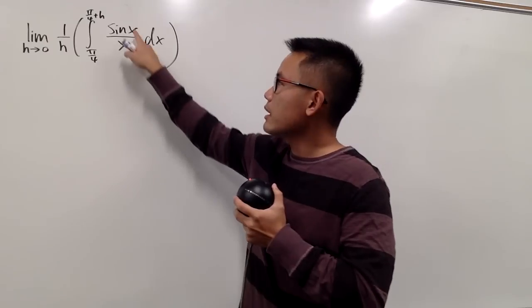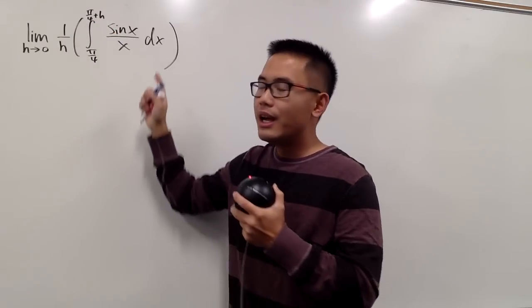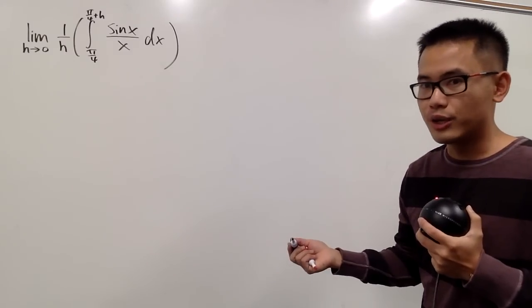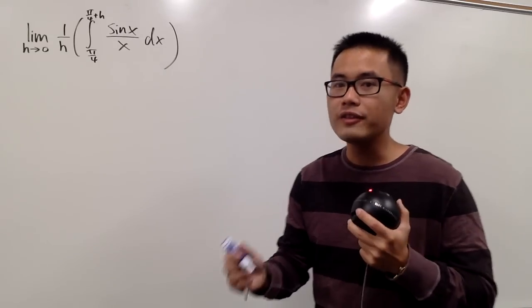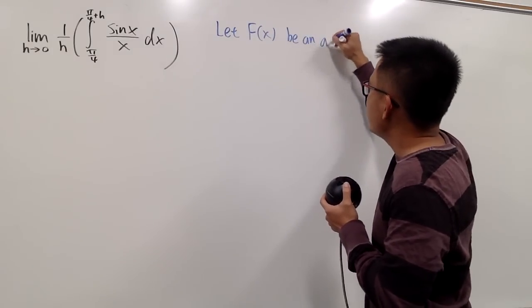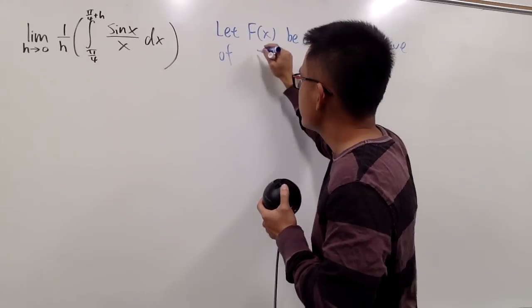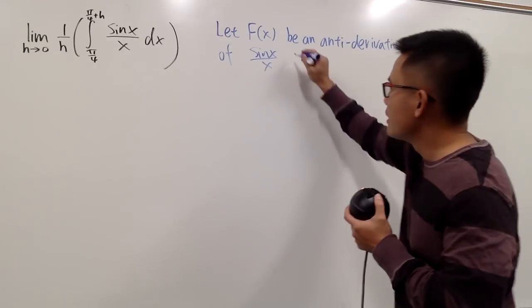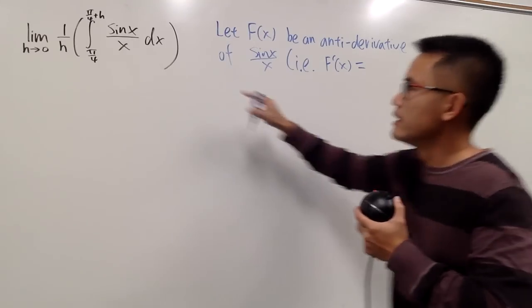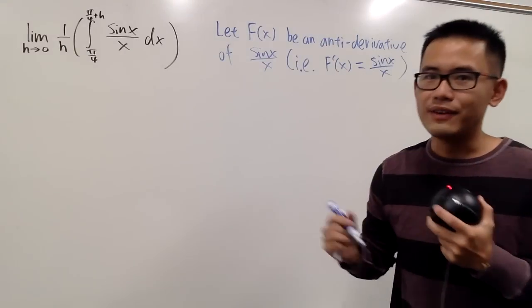But we do know that sin(x)/x has an anti-derivative because this is continuous from π/4 to π/4 plus h. The only bad x value here is x equal to 0. So here is how we can approach this kind of situation. I cannot tell you an explicit form for the anti-derivative, but I can say something like this. This is continuous and it's actually doable.